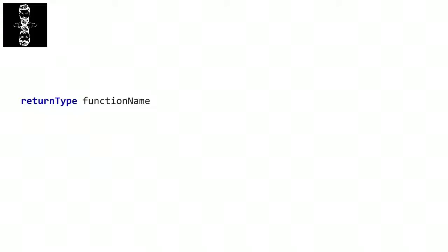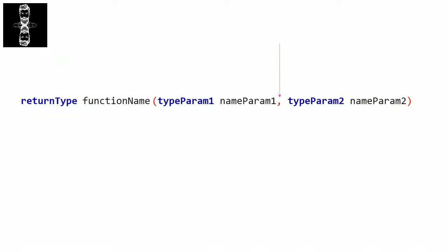We put parameters between parentheses, separated by a comma. For each parameter, we must specify its data type and its name. We can have any number of parameters we want, or we can choose zero parameters — in that case we just leave empty parentheses. After that, we have the body of the function: we open curly brackets, and inside we put the instructions that will be executed when we call the function.